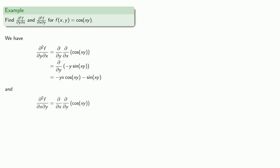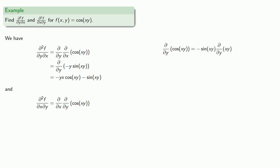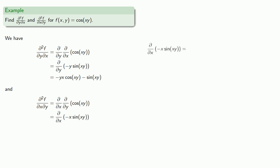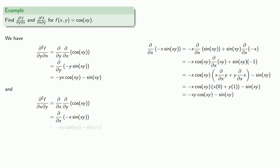What if we differentiate with respect to y first? Differentiating cosine(xy) with respect to y, we treat x like a constant. This is the derivative of cosine, and we have to differentiate the product. Since we're differentiating with respect to y, we treat x like a constant. Now we want to differentiate with respect to x. And after all the dust settles, we get this expression.